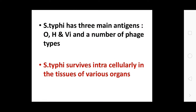S. typhi has three main antigens O, H, and Vi, and a number of phage types. S. typhi survives intracellularly in tissues of various organs.